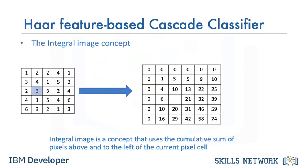Let's try this once more. To get the integral sum of the highlighted pixel, we get the sum of 2, 4, 1, 3, 2, and itself 3, giving us 15. The Viola Jones paper used a 24 by 24 base window size as an example, and that would result in more than 180,000 features calculated in the integral image.